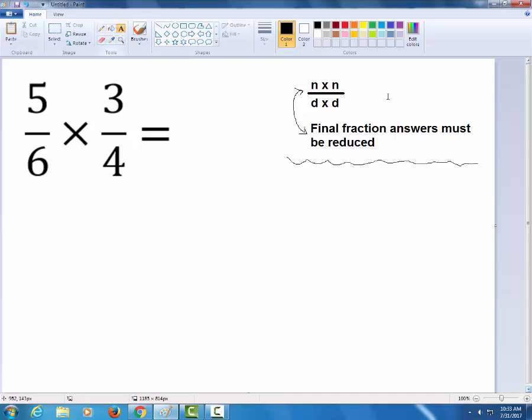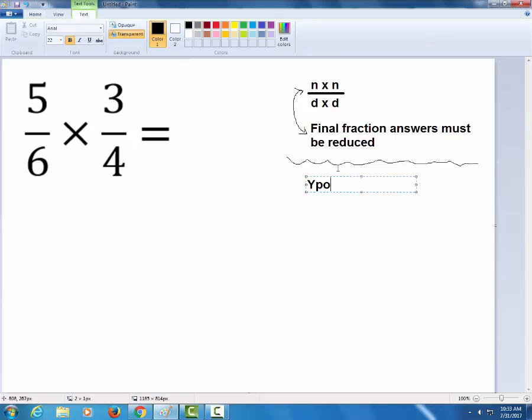But you can also switch the order on this. You can actually reduce before you multiply, using what's known as cross-reducing. Careful, this is not cross-multiplying. Students mix that up. This is cross-reducing.